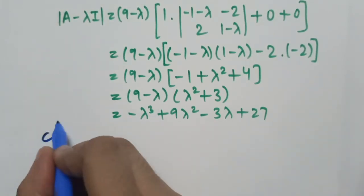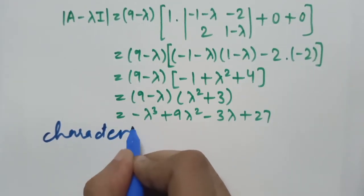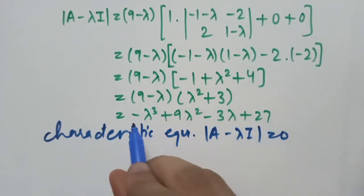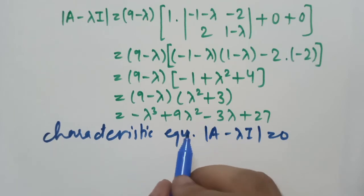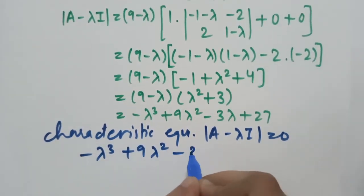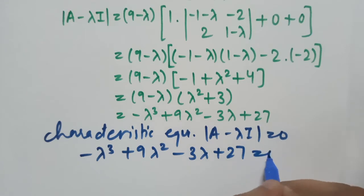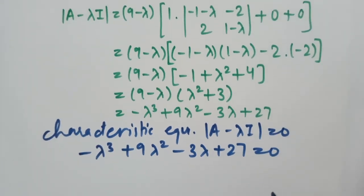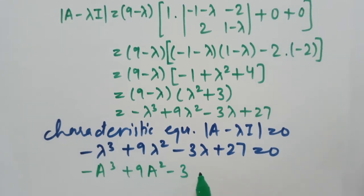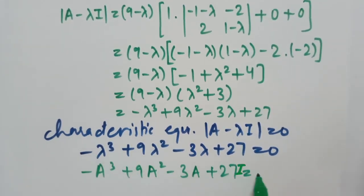The characteristic equation is |A − lambda I| = 0, so the characteristic equation is: minus lambda cubed plus 9 lambda squared minus 3 lambda plus 27 = 0. To verify the Cayley-Hamilton theorem, we need to check that minus A cubed plus 9A squared minus 3A plus 27I equals the zero matrix.